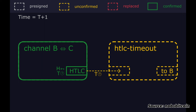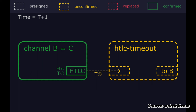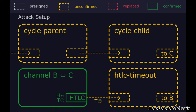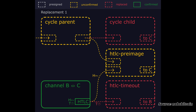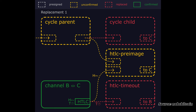At block T, Carol still hasn't revealed the pre-image to settle the payment, so Bob is forced to time it out on-chain. He broadcasts the commitment transaction to close his channel with Carol, and once it confirms, he sends an HTLC timeout transaction which spends the HTLC to reclaim his funds. Unfortunately for Bob, Alice and Carol are colluding to steal his money. They've prepared for the attack by broadcasting a chain of two transactions with low fees — called the cycle parent and cycle child — apparently unrelated to the Lightning channel. As soon as the attackers see Bob's HTLC timeout transaction hit the mempool, they broadcast an HTLC pre-image transaction which spends both the HTLC output using Carol's hash pre-image and an output from the cycle parent.